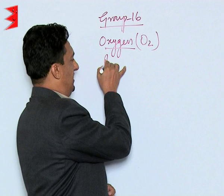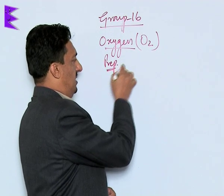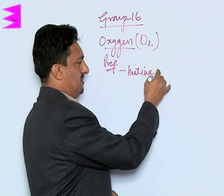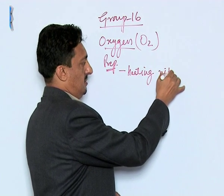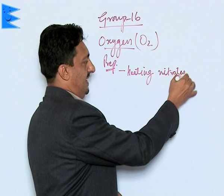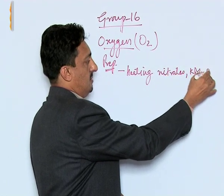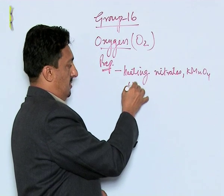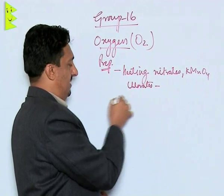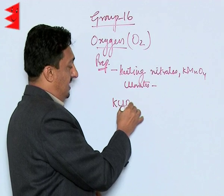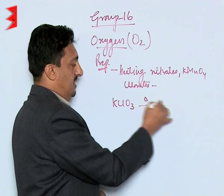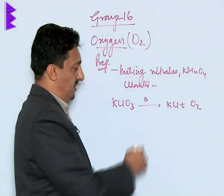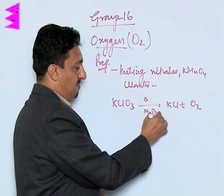It can be prepared by heating nitrates, KMNO4, and chlorates. Like KClO3 when heated decomposes to give KCl and O2. This reaction is catalyzed by MNO2.